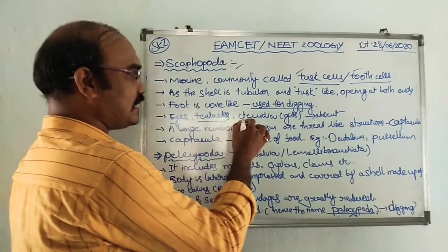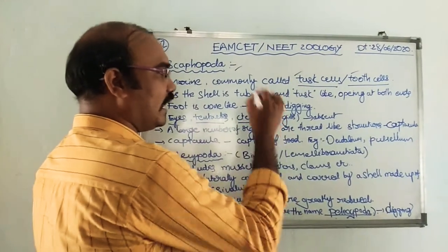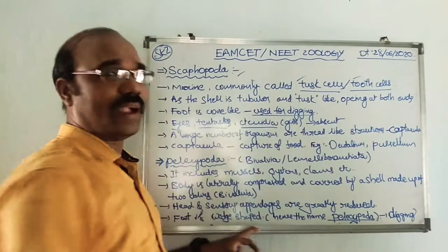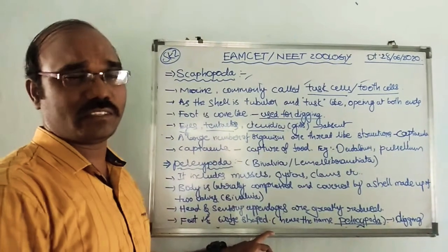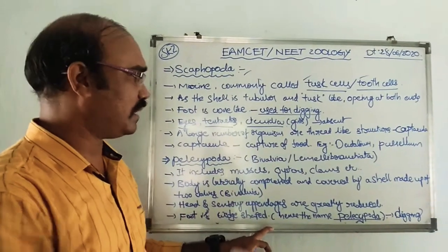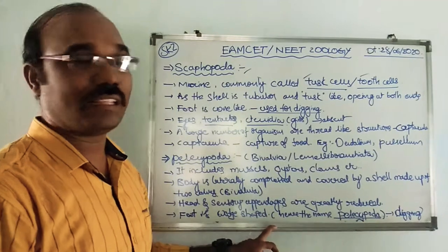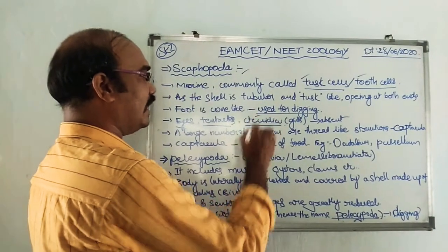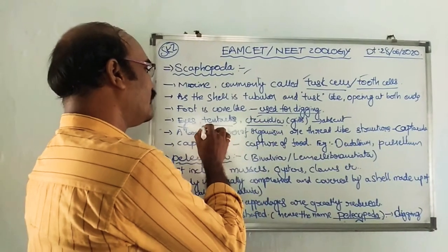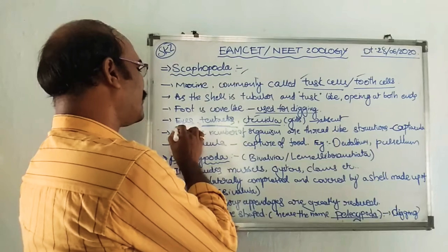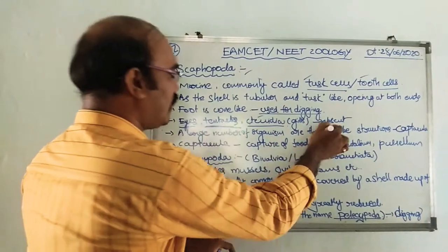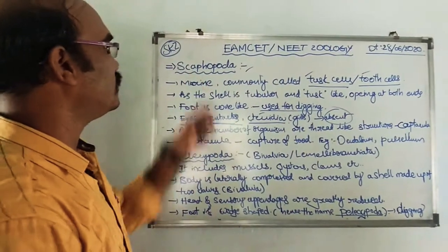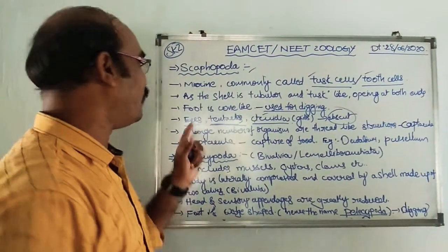Eyes, tentacles, and ctenidia — ctenidia is the mantle cavity structure present inside the mantle cavity — are absent in the Scaphopoda.